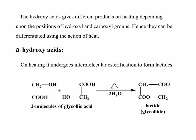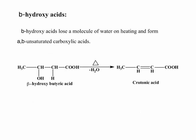β-hydroxy acids lose a molecule of water on heating to form α,β-unsaturated carboxylic acids. For example, β-hydroxybutyric acid loses a molecule of water by heating to form crotonic acid, which is an α,β-unsaturated carboxylic acid.